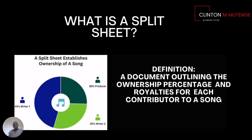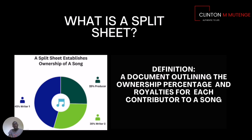By definition, a spreadsheet is a document outlining the ownership percentage and royalties for each contributor to a song. It establishes ownership, where the owner of the song gets the highest payout of royalties — 45 percent — though that can change depending on the number of people involved. A producer is entitled to 25 percent of the song, and the co-writer gets 30 percent royalties.